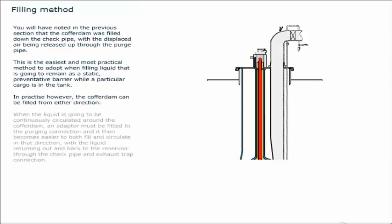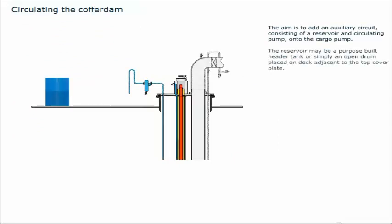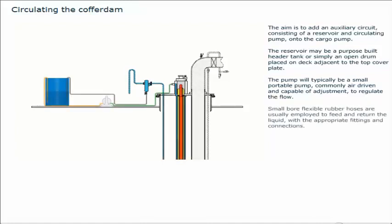When the liquid is going to be continuously circulated around the cofferdam, an adapter must be fitted to the purging connection, and it then becomes easier to both fill and circulate in that direction, with the liquid returning out and back to the reservoir through the check pipe and exhaust trap connection. The aim is to add an auxiliary circuit, consisting of a reservoir and circulating pump, onto the cargo pump. The reservoir may be a purpose-built header tank or simply an open drum placed on deck adjacent to the top cover plate. The pump will typically be a small portable pump, commonly air-driven and capable of adjustment to regulate the flow. Small bore flexible rubber hoses are usually employed to feed and return the liquid, with the appropriate fittings and connections.